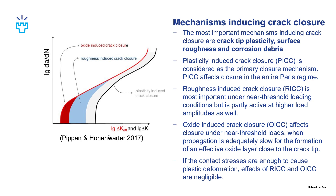About the many mechanisms inducing crack closure, the most important of which are due to crack plasticity, surface roughness, and corrosion debris. Plasticity induced crack closure, or PICC, is considered to be the main closure mechanism and it affects closure in the entire Paris regime, as we can see in this figure. Roughness induced crack closure, or RICC, is most important under near-threshold loading conditions but is also partly active at higher loads as well.